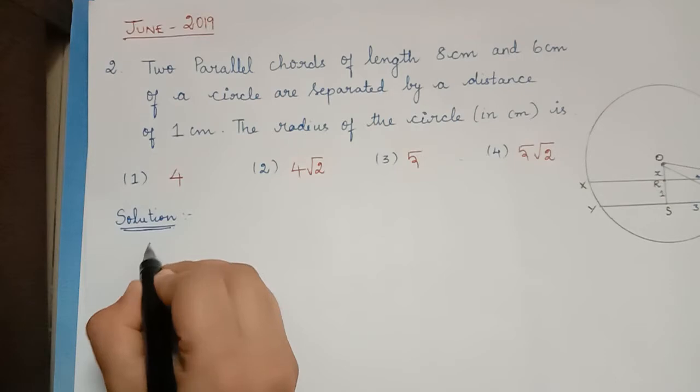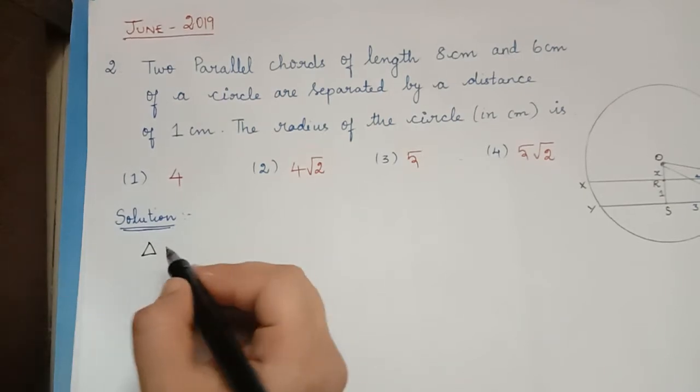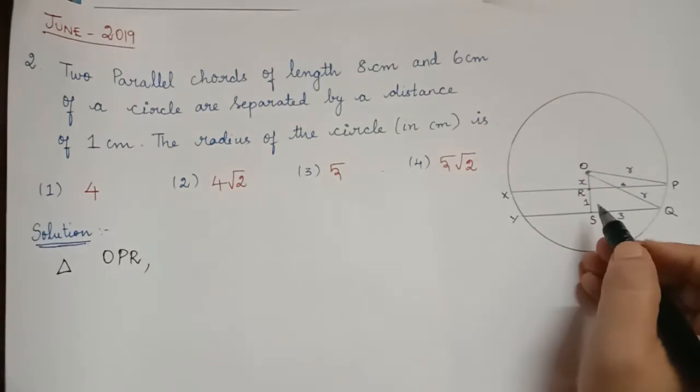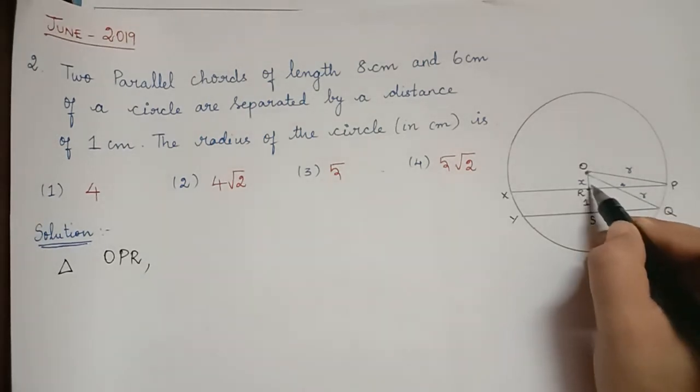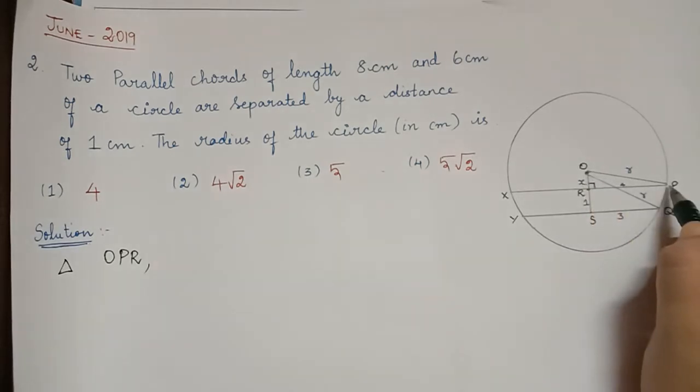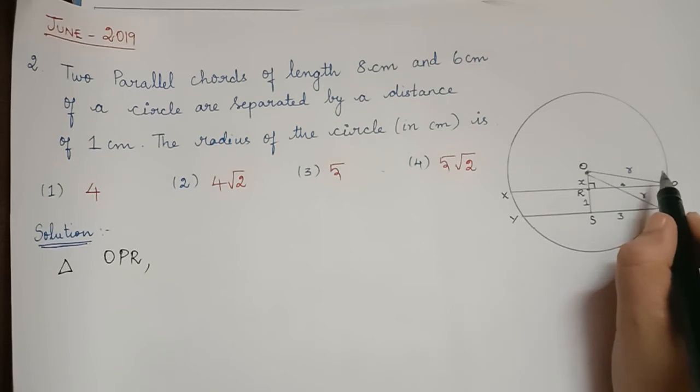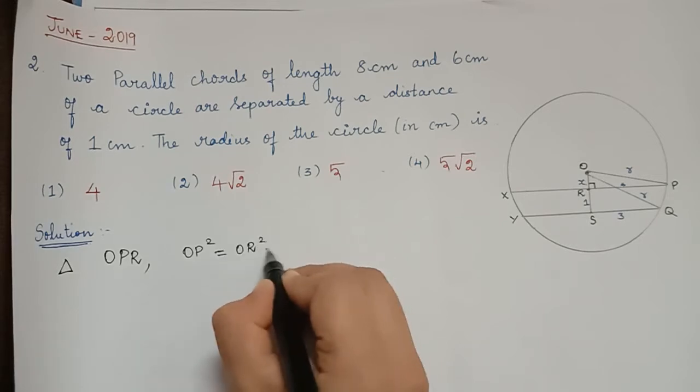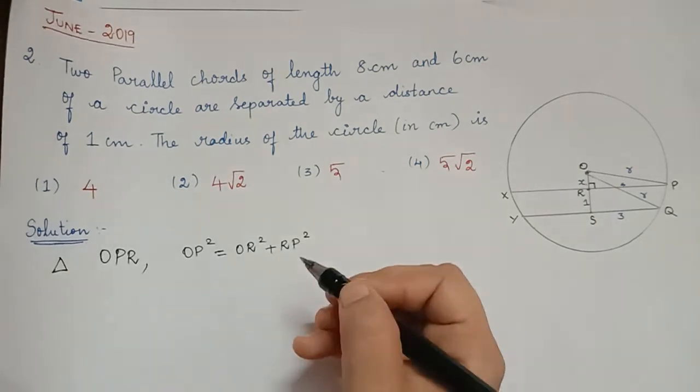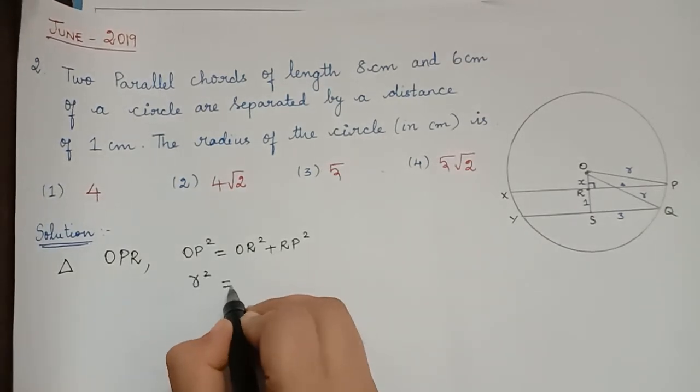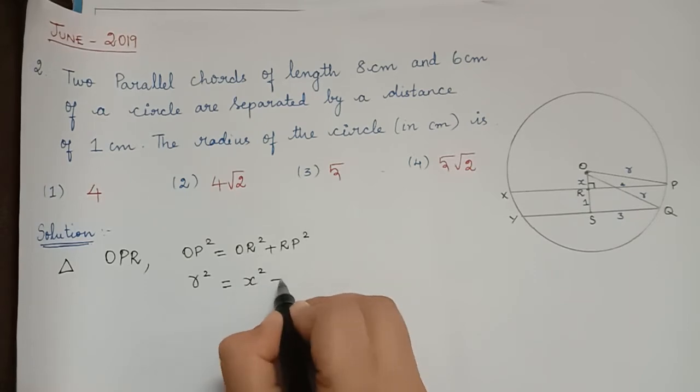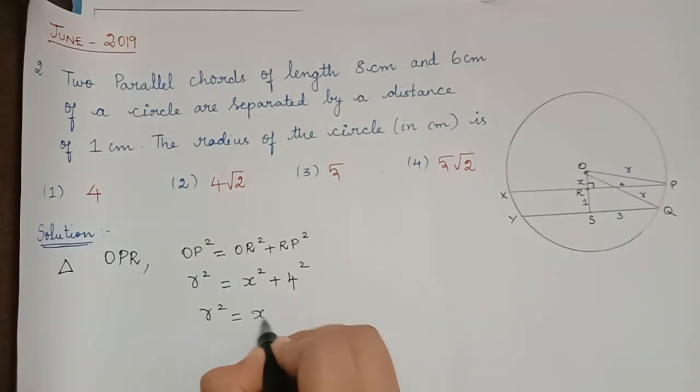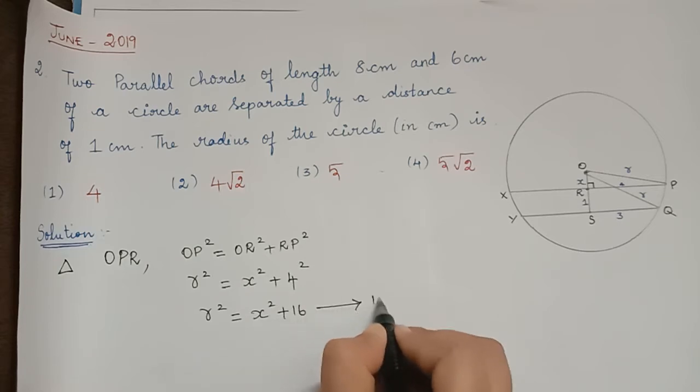First, we shall consider the triangle OPR. From this diagram, in the triangle OPR, angle R is the right angle and OP is the hypotenuse. So, by using the Pythagoras theorem, we can write OP square is equal to OR square plus RP square. Now, OP square is R square is equal to OR is X, so X square plus RP is 4, so 4 square. Therefore, R square is equal to X square plus 16. Let us mark this as equation 1.